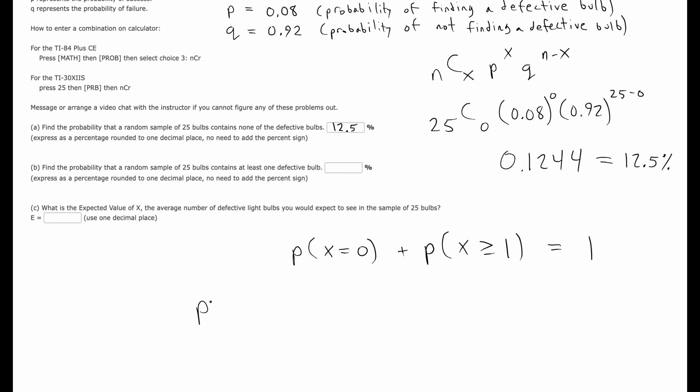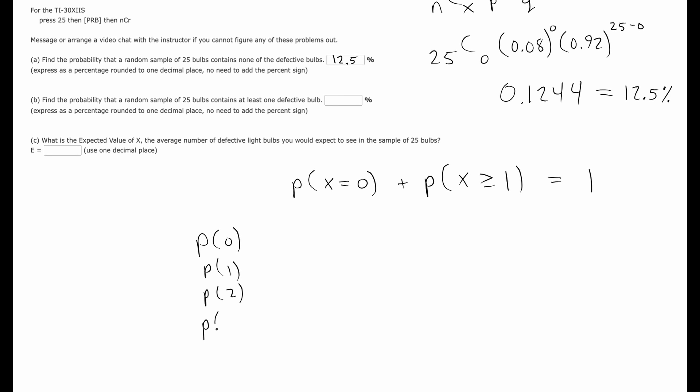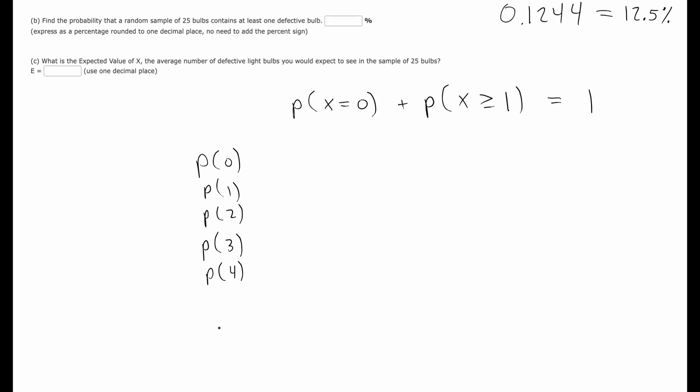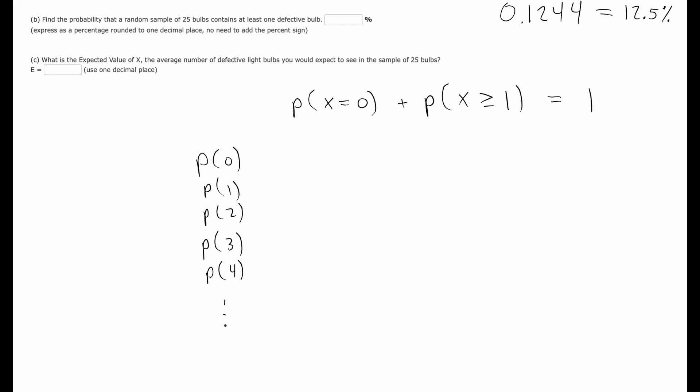Because you've got like your probability of zero, probability of getting one, probability of getting two, and so on. That's going to be a long list though because you have 25 trials, so that's just going to keep going like that. And if you really want the probability of getting X to be greater than or equal to one,